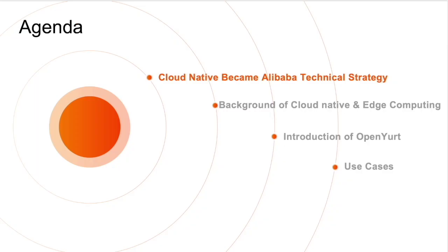There are four parts in today's topic. First, I will share some thoughts about Cloud Native and present commercial and open-source practice details about Cloud Native in Alibaba Cloud. In the second part, we will look at the background of Cloud Native and edge computing and analyze how to use Kubernetes to build a cloud-edge integration architecture. Then I will explain OpenYurt in detail and take one commercial use case named ACK Edge.